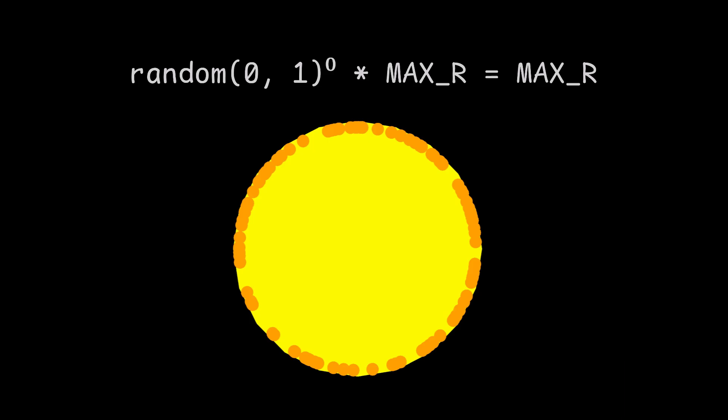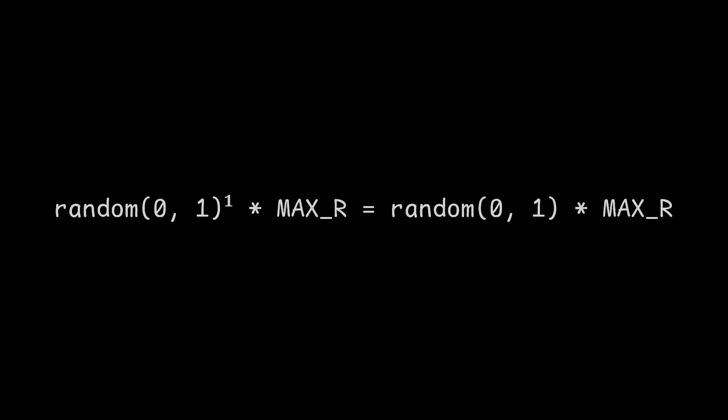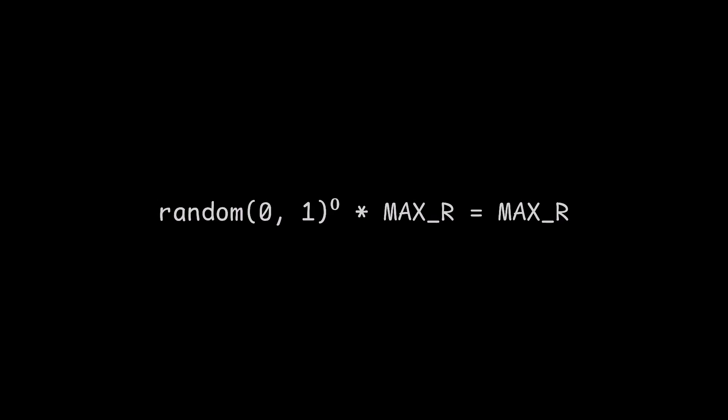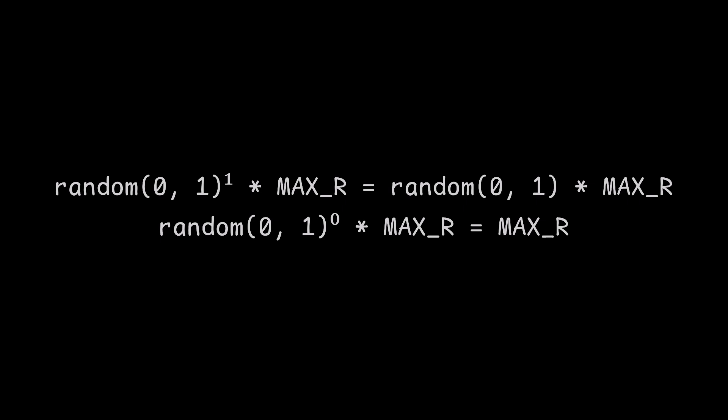If we raise it to the power of 0, we get max r, because any number to the power of 0 is 1. Let's jump up by a lot and raise it to the power of 1. That actually does nothing. But wait, what if we choose the power right between the point when they're all on the edge and the point when they're densely put around the center?